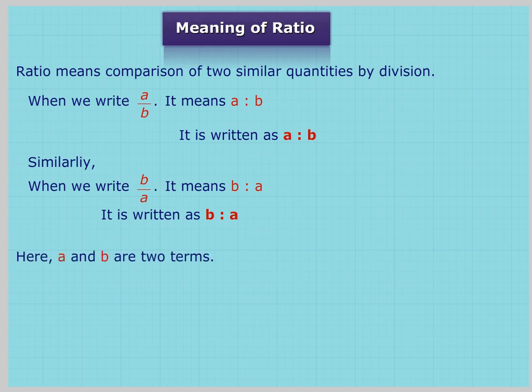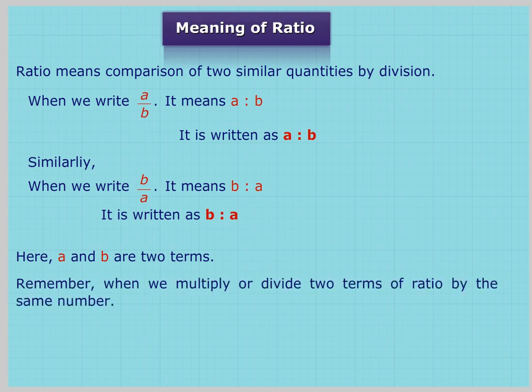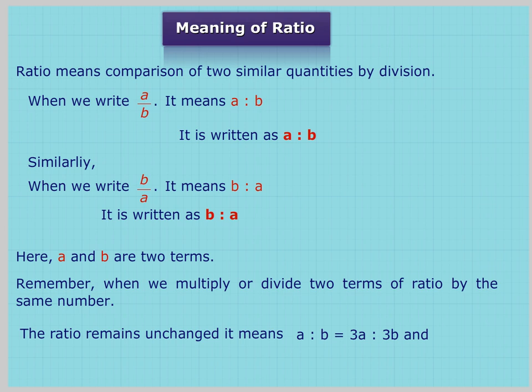Here, A and B are two terms. Remember, when we multiply or divide two terms of a ratio by the same number, the ratio remains unchanged. This means ratio of A to B equals ratio of 3A to 3B, and ratio of B to A equals ratio of (B÷5) to (A÷5).